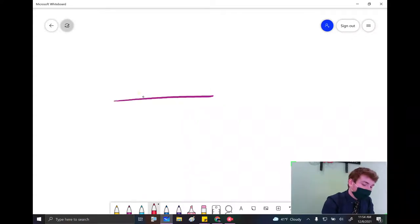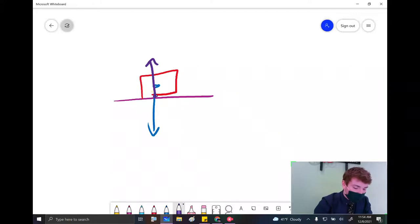So for example, if we're on a flat surface, we have a box. Gravity is going down. Normal force is equal and opposite to that. So it's always going equal magnitude, opposite direction of the gravitational force.